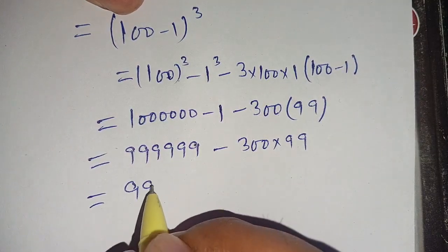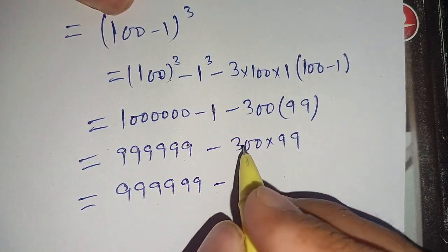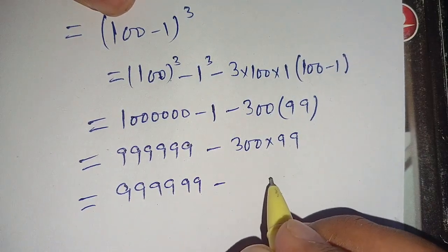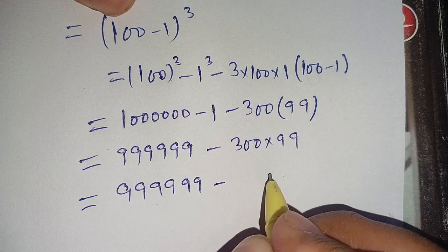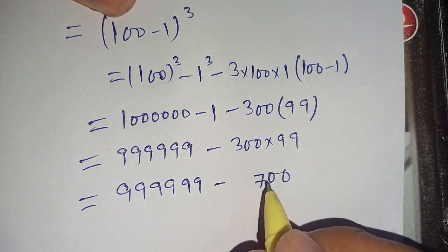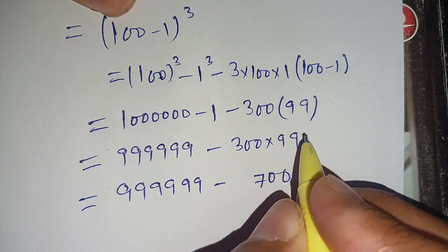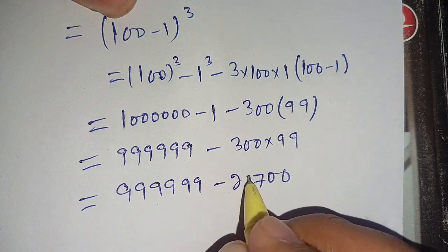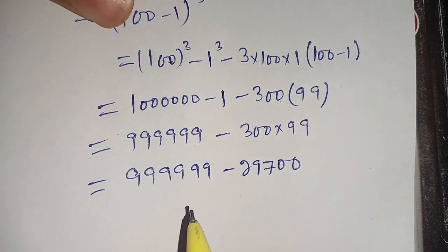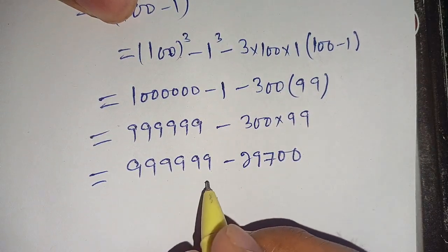So we have 999,999 minus 300 times 99. When we multiply 300 times 99 it becomes 29,700. So we subtract 29,700 from 999,999.